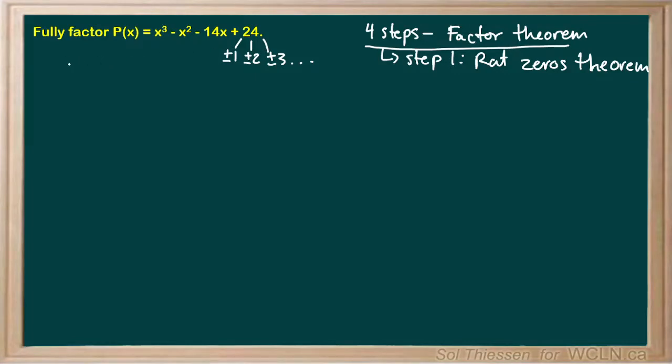Let's start by testing 1 and see if 1 is a root of this polynomial. So to do that, we would evaluate p of 1. So p of 1, right away I can tell you, is not 0. Since we'll have 1 minus 1 minus 14 plus 24, 1 minus 1 is 0, then we have negative 14 plus 24, so that's not going to be equal to 0.